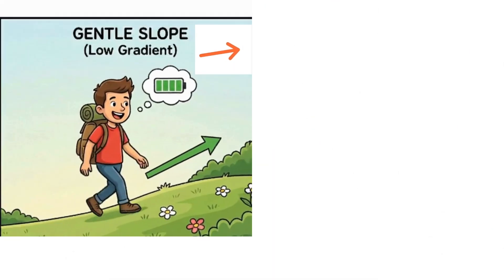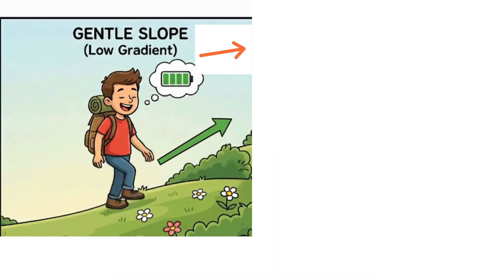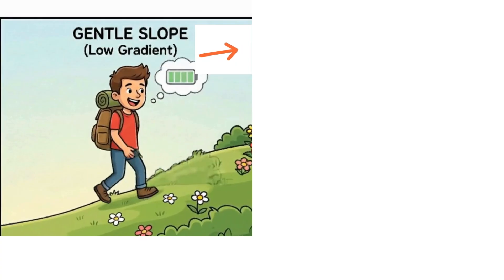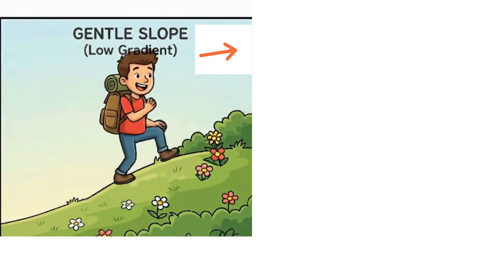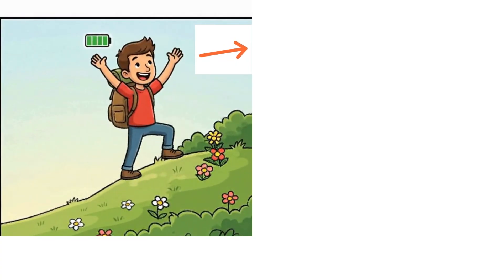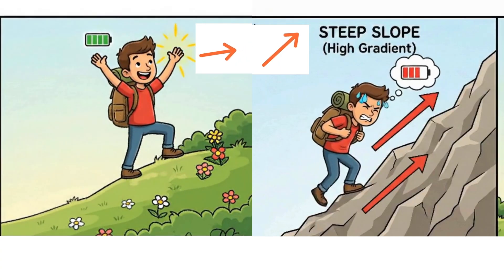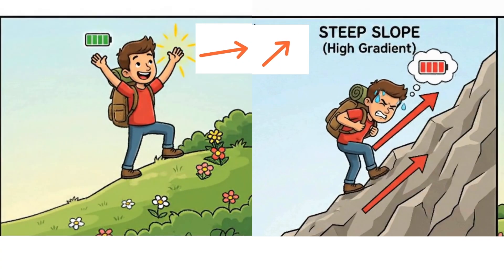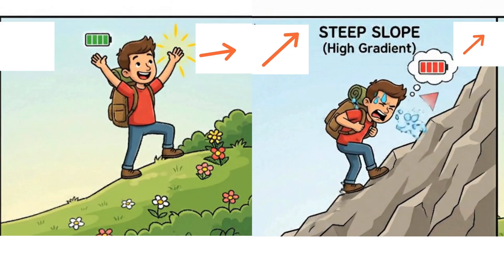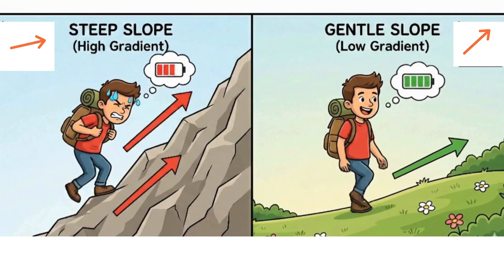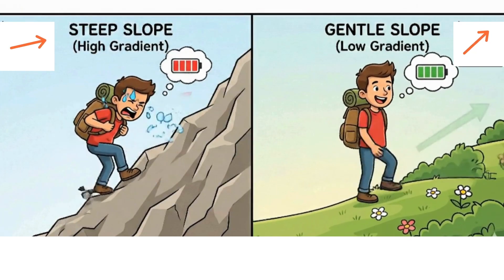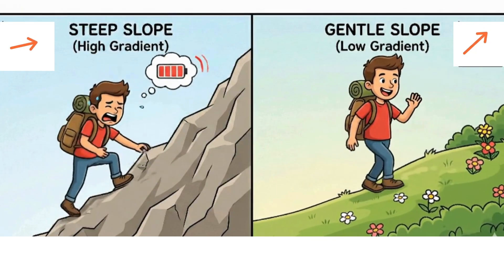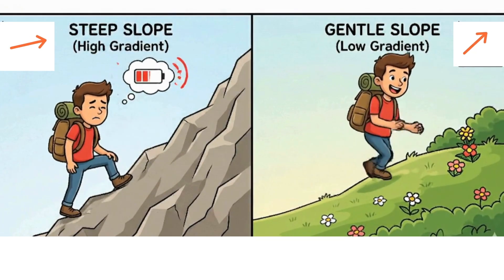Imagine you're walking up a hill. Some hills are gentle, and you barely notice the climb. Others are steep, and you feel your legs working hard. That difference — how gentle or steep something is — is exactly what slope measures in mathematics.